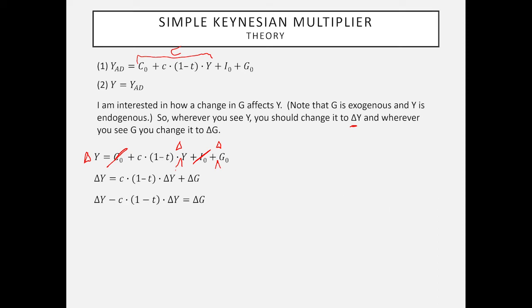I can rewrite this as 1 minus c(1-t) times Y equals ΔG. Rearranging, I can write ΔY divided by ΔG. So this really is the Keynesian multiplier, equal to 1 over 1 minus, keep in mind what these are, marginal propensity to consume times 1 minus the tax rate.